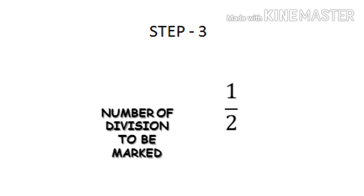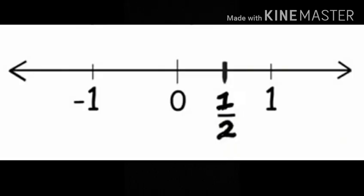Step number 3: Check the numerator. It tells us which division we have to mark starting from 0. Our numerator is 1. So we will move one step ahead of 0 and mark 1 upon 2 on this point.